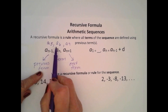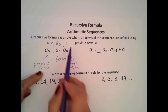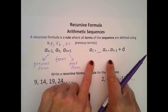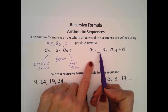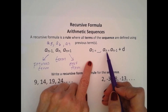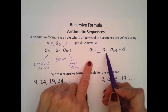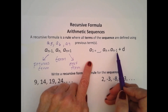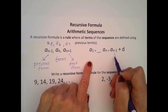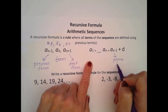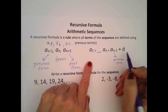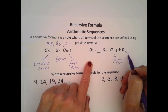Now we can see that we have three consecutive terms. Now let's look at how we would write any recursive formula. We would start out with a sub 1 equal to the first term. Then we would write a recursive formula for a sub n: a sub n, any term in the sequence, would be equal to a sub n minus 1, which is our previous term, plus d, and d is going to be our common difference.